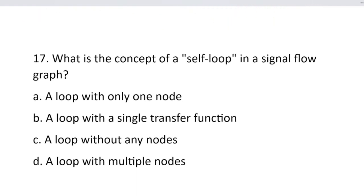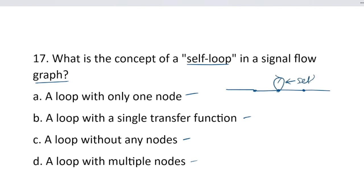Question number 17. What is the concept of a self-loop in a signal flow graph? Option A, a loop with only one node. Option B, a loop with a single transfer function. Option C, a loop without any nodes. Option D, a loop with multiple nodes. The correct answer is option A — a loop with only one node. Here input R and output C are present.